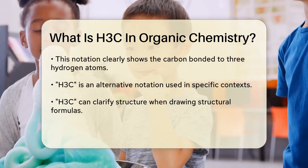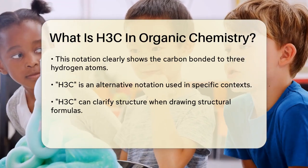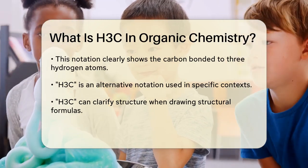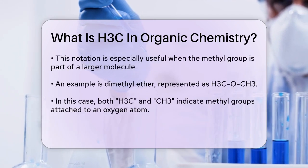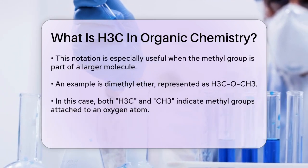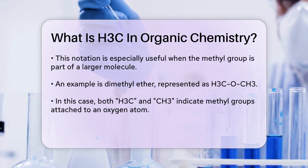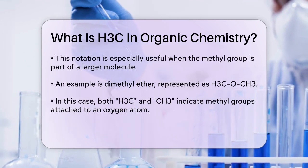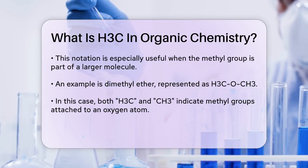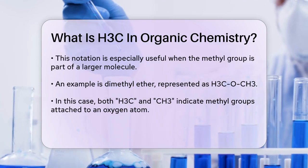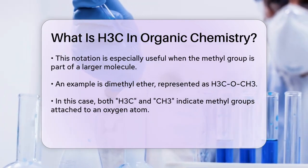On the other hand, H3C is another way to write the same methyl group, but it can be used in specific contexts to clarify the structure. For example, when drawing a structural formula, using H3C can help show the correct bonding sequence, especially when the methyl group is attached to a larger molecule or a benzene ring. This notation ensures that the carbon atom's bonds are clearly depicted.